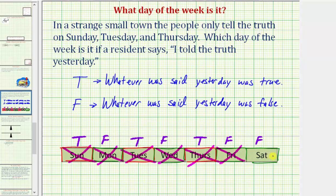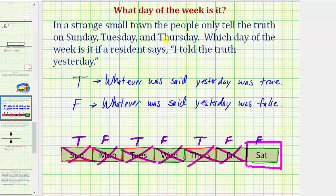But finally, notice the day before Saturday is Friday, and on Friday whatever the resident says is false. Therefore on Saturday, whatever the resident said yesterday was false is correct, and therefore the only possible day it could be is Saturday. So in this strange town, where the people only tell the truth on Sunday, Tuesday, and Thursday, if a resident says 'I told the truth yesterday,' the day must be Saturday.